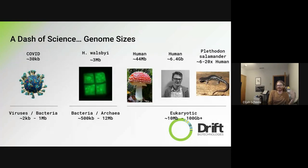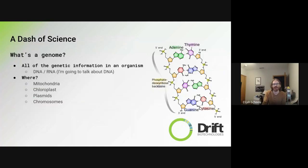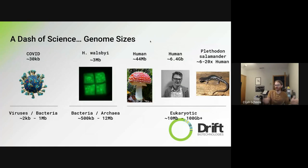Let's talk about the size of genomes — the collective genetic information of an organism. We count genome size by the number of base pairs. The nice thing about DNA is you get the reverse complement, so A only binds to T and C only binds to G. COVID is a virus with about 30 kilobase pairs — 30,000 bases for its entire genome. Most viruses and bacteria are in the 2K to 1 megabase pair range.